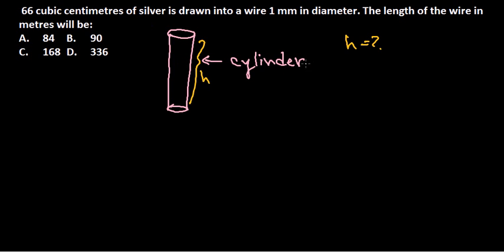But we know the rest of the things. We know the volume - the volume in this case is provided and the volume is 66 cubic centimeters, right? And what they also provide is the diameter. Diameter means this whole length, so the diameter is also provided - it's found to be one millimeter.